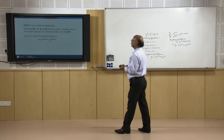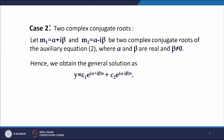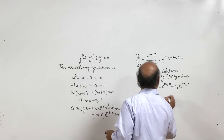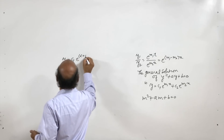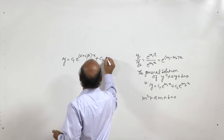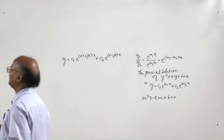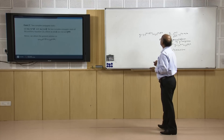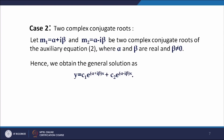Now let us consider the case of two complex conjugate roots. Let m₁ = α + iβ and m₂ = α − iβ be the two complex conjugate roots of the auxiliary equation m² + am + b = 0, where α and β are real numbers and β ≠ 0. Since in applications we work with real solutions, let us find the real solutions of the homogeneous second order linear differential equation.